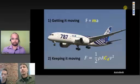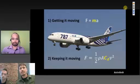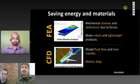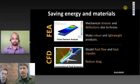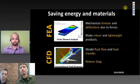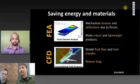A couple of the tools we're going to be talking about are FEA and CFD. FEA stands for finite element analysis, and it can help you understand mechanical stresses and deflections due to forces — that can help you make robust and lightweight products. CFD stands for computational fluid dynamics, and that helps you model fluid flow and heat transfer, which can help you do things like reduce drag in the example of an airplane.